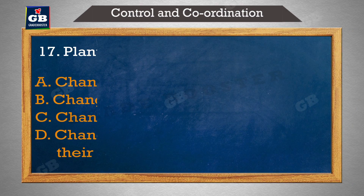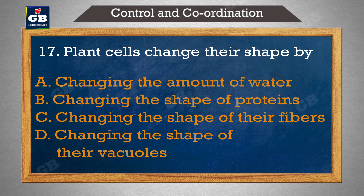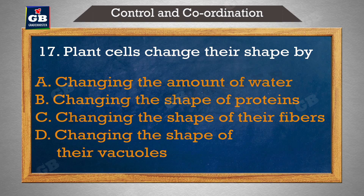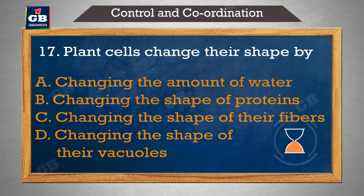Plant cells change their shape by — plant cells isse apna aakar badalti hai: A) changing the amount of water, B) changing the shape of proteins, C) changing the shape of their fibers, D) changing the shape of their vacuoles.